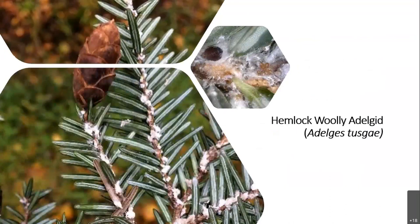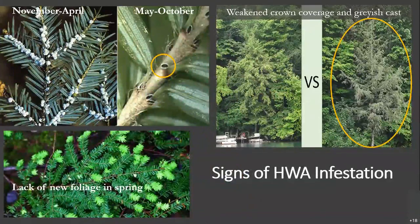Hemlock woolly adelgid, or HWA for short, is an aphid-like insect native to southern Japan that measures only several millimeters in size but has a big impact on our forests. HWA sucks down the xylem — the nutrient storage of hemlock trees — and over time infested trees weaken and eventually die, between 4 to 20 years depending on HWA population density and environmental factors. It takes only one female to introduce an infestation, and each female can lay between 50 and 100 eggs, producing two generations a year. HWA can be spotted year-round, but the signs to look for vary by season. From November to April, look for white woolly masses on twigs at the base of the needles — look underneath the branches.